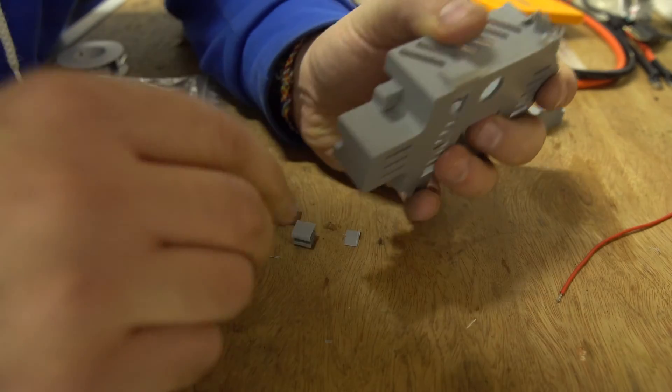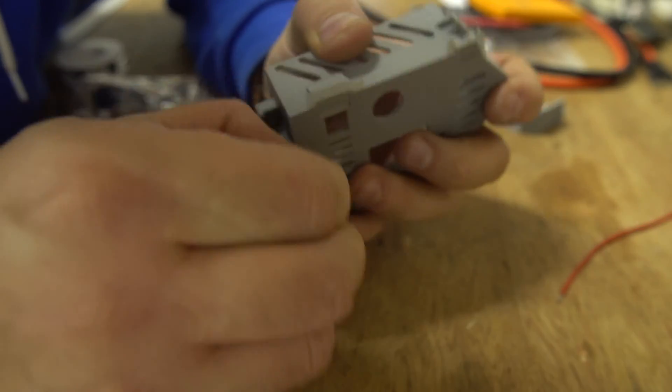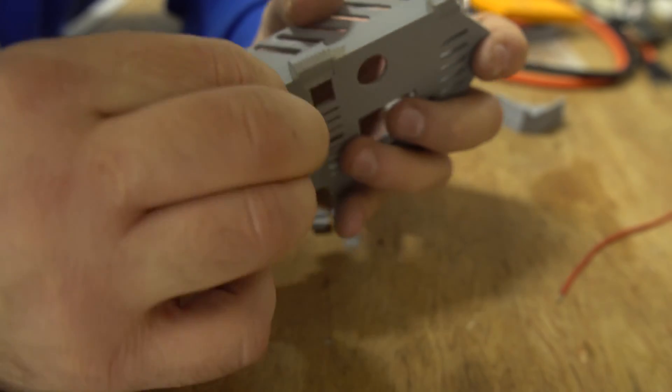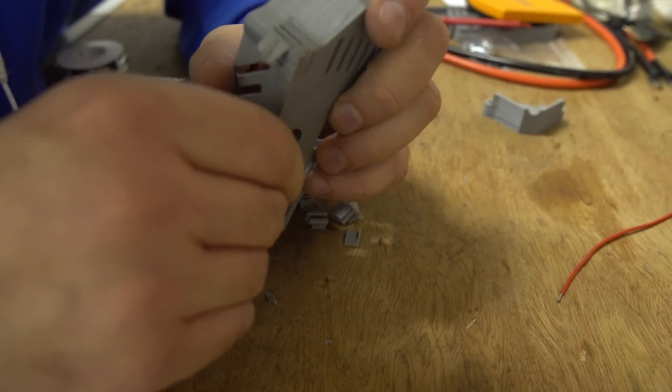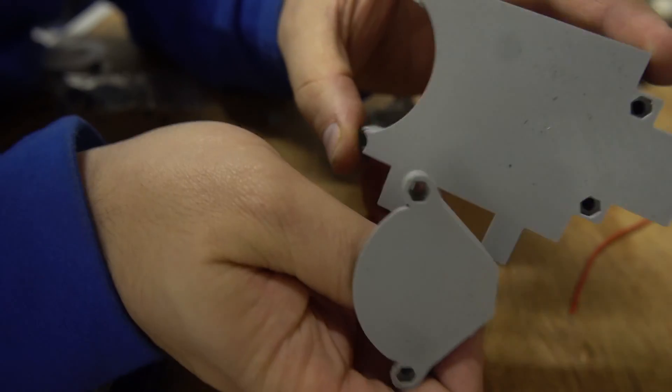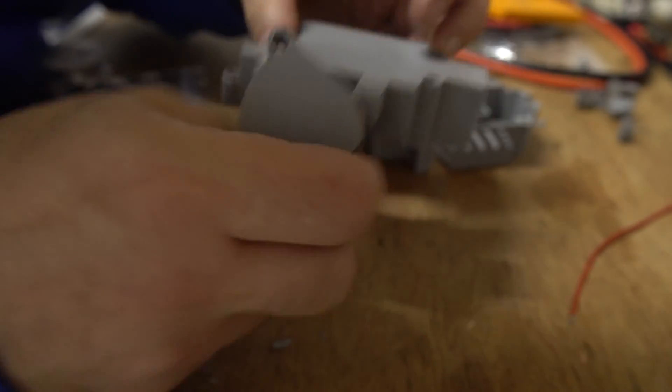So guys, next job is to prepare the case. Now it says in the instructions and it's true that you have to remove the supports from this 3d printed case. Now I don't know about you but I think that's a bit of an ask really. If you're going to use a 3d printed case at least prepare it for your customers. I use 3d printed cases in some of my stuff and I would never dream of sending something out with the supports on.